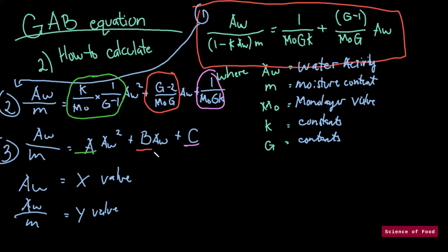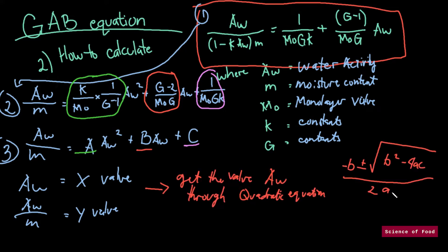So once we have the values for A, B, and C, we would now want to get the value water activity through the quadratic equation. So that's for the water activity. To get the monolayer value, we would use this equation. 1 over the square root of B squared minus 4AC. So those are the equations that you would be needing to solve or to calculate using the GAB equation. Now let's go to our example.